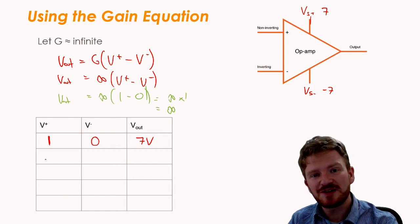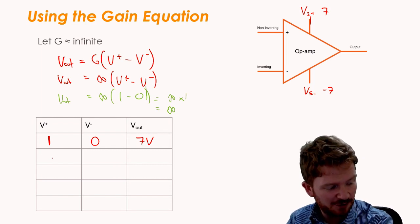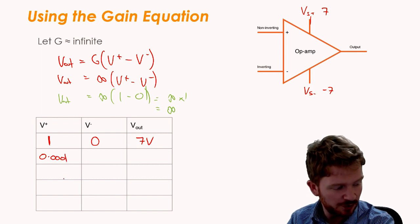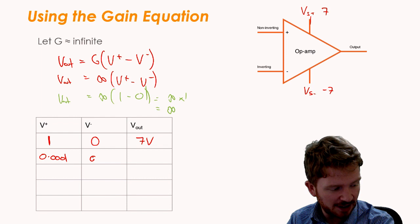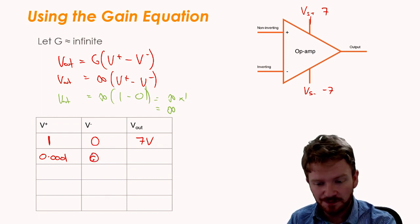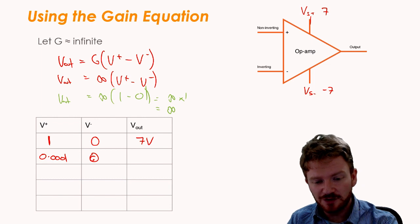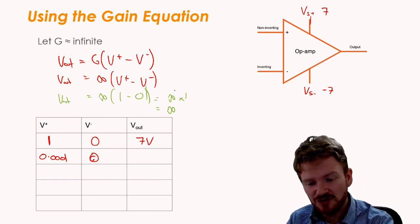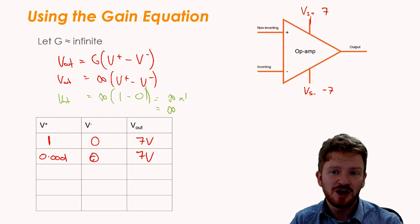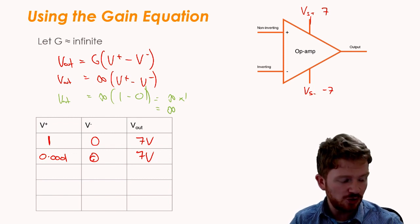But then there starts to be something quite important here. If I have 0.001 volt on my non-inverting input and 0 volts on my inverting input, well, again, the non-inverting is larger, but because it's being multiplied by a huge number, my output will still be 7 volts because it's still trying to be infinite, even though it's a small difference. A small difference multiplied by infinity is huge.